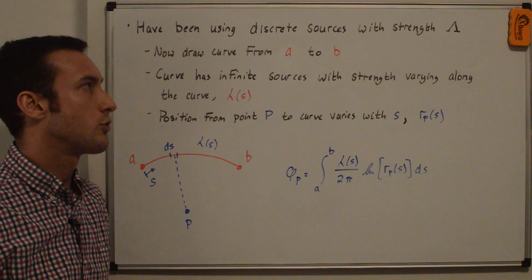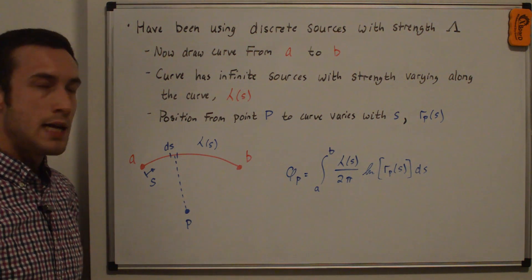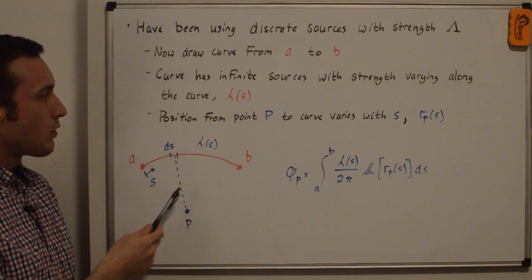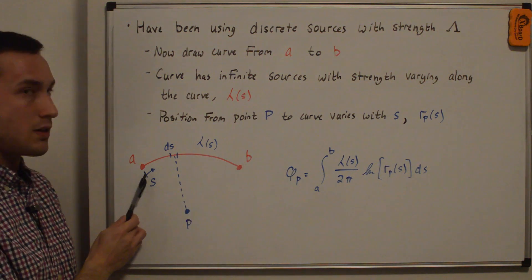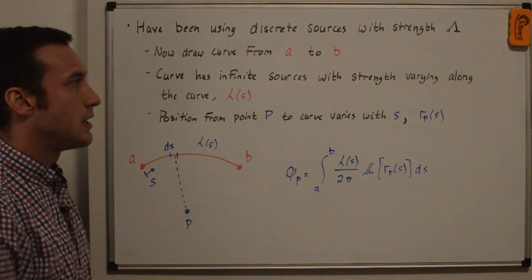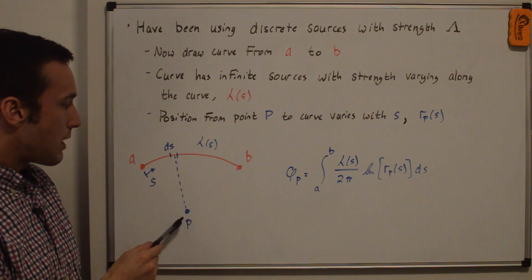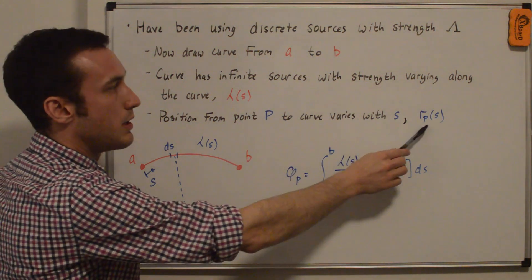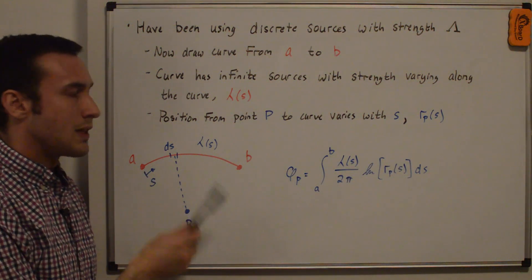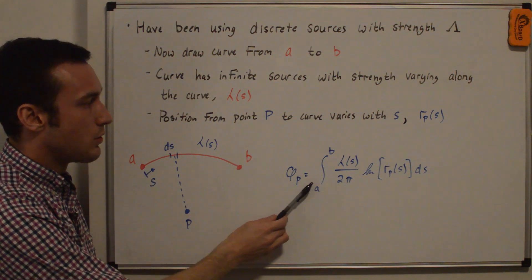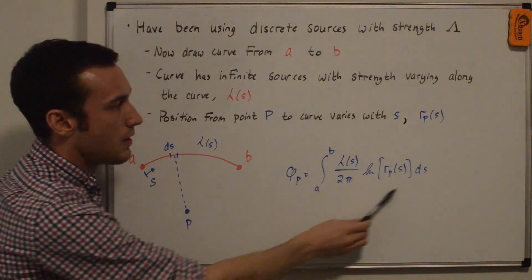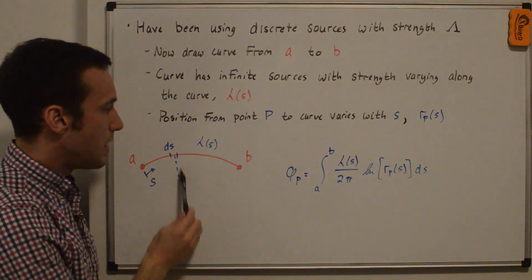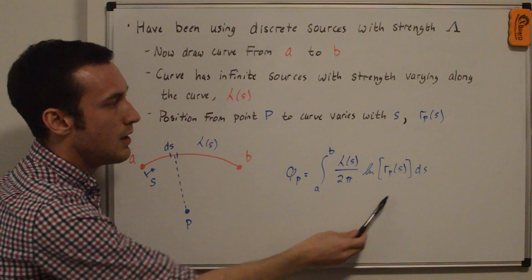Up to now we've been using discrete sources with strength capital lambda. Now let's draw a curve from a to b. This curve has infinite sources with the strength varying along the curve — lambda as a function of s, where s is the distance progress variable from a to b. Note that this is actually a strength per unit distance. The distance from point P to the curve also varies with s, called r_P(s). The velocity potential induced at point P from this curve is phi_P equals the integral from a to b of lambda(s) over two pi times the natural log of r_P(s) ds.